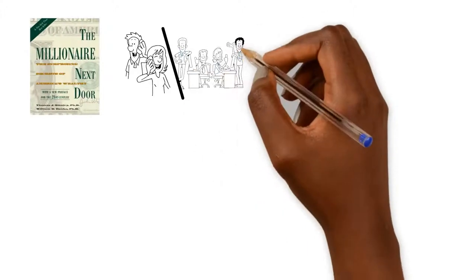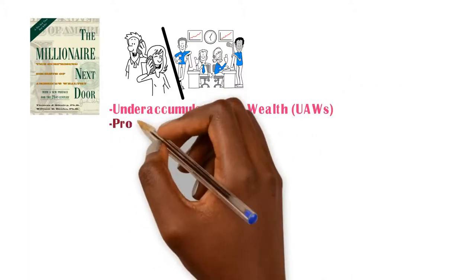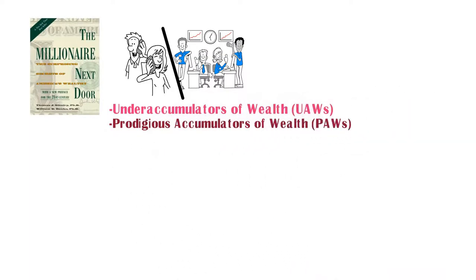This book essentially splits everyone into two categories: Under accumulators of wealth (UAWs) and prodigious accumulators of wealth (PAWs).